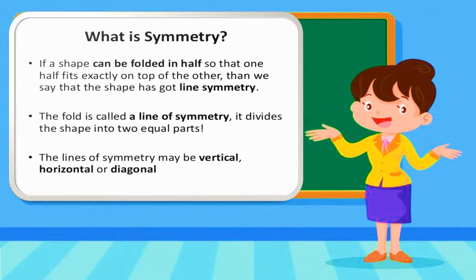If a shape can be folded in half so that one half fits exactly on top of the other, then we say that the shape has got line symmetry. The fold is called a line of symmetry. It divides the shape into two equal parts. The lines of symmetry may be vertical, meaning standing, horizontal, or diagonal.